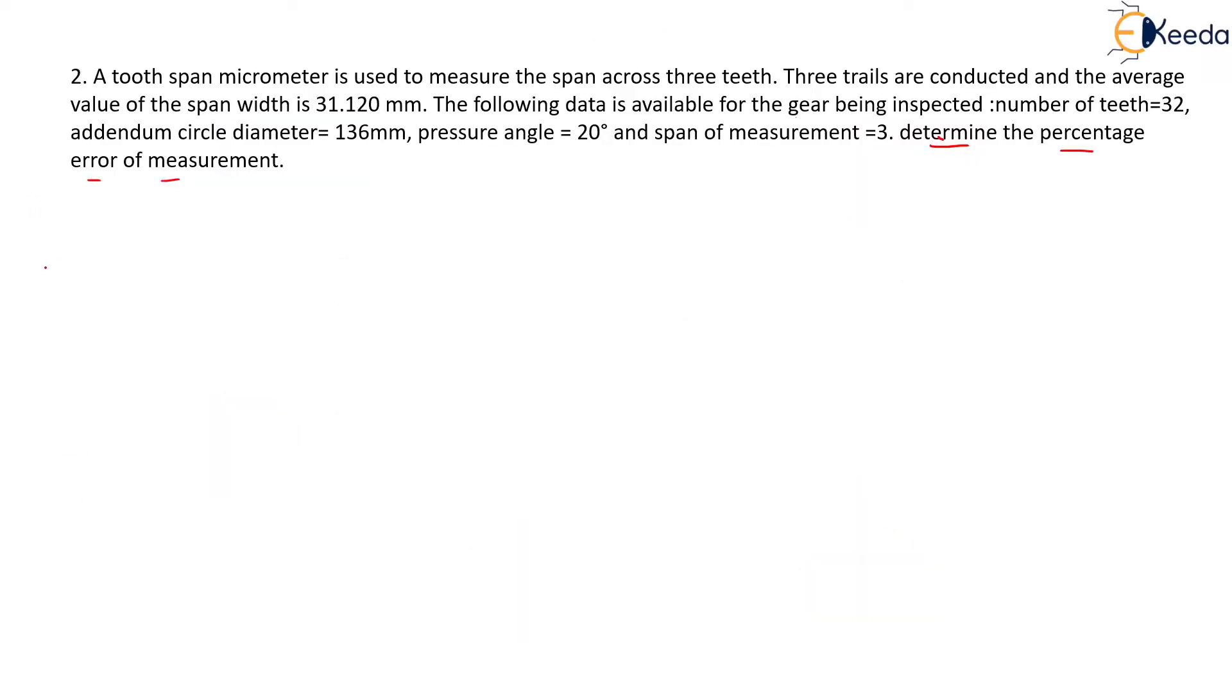So what they have given we will see first. So here they say that a tooth span micrometer is used to measure the span across three teeth. Three trials are conducted and the average value of the span width is given as 31.120 mm.